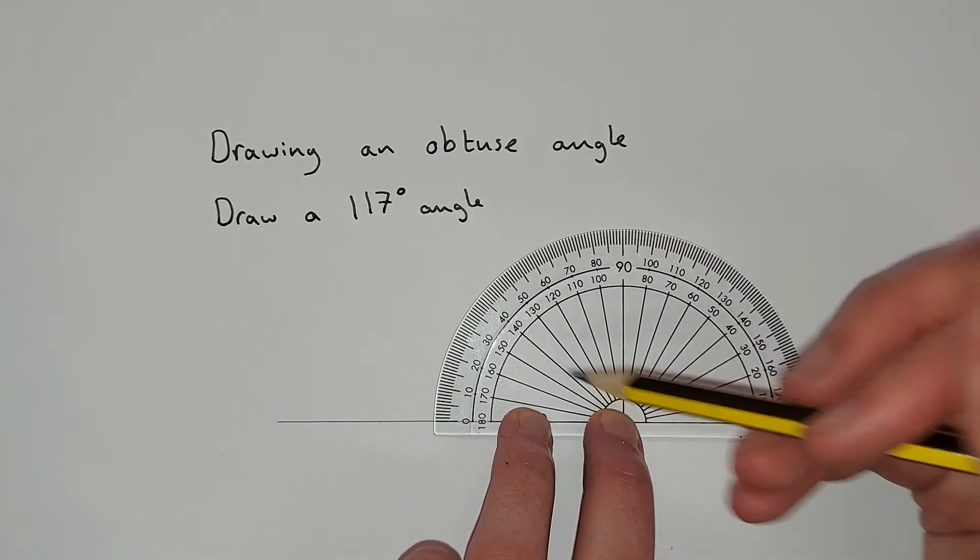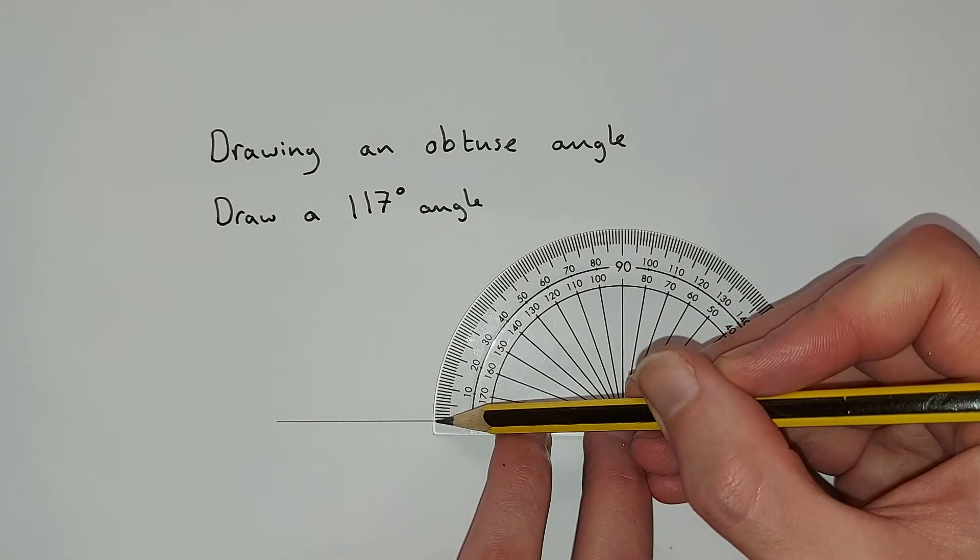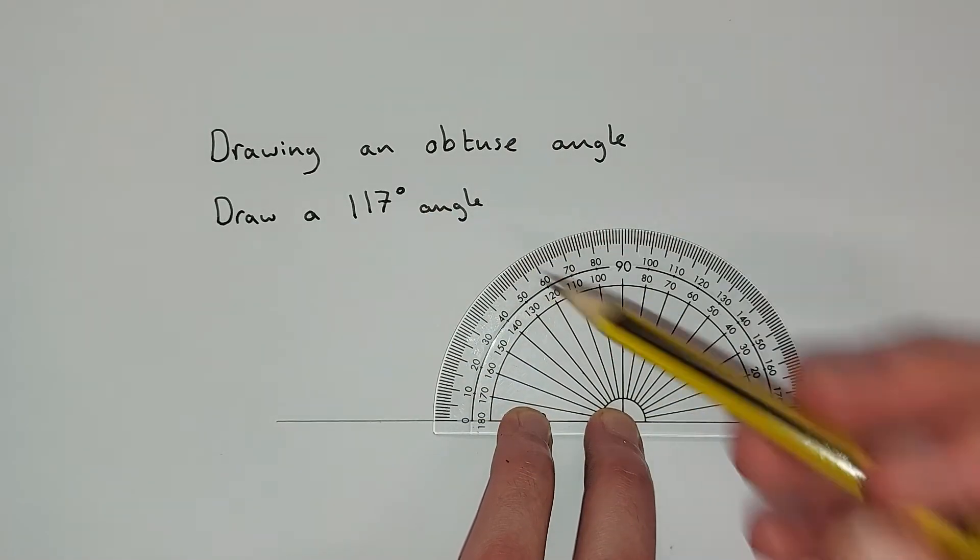Now our angle is going to be coming from this line, so we want to make sure there's zero. That's what we're starting from. We're going to get up to 117.